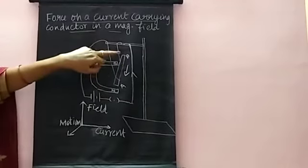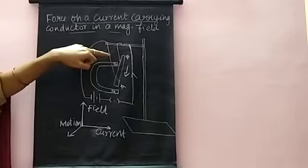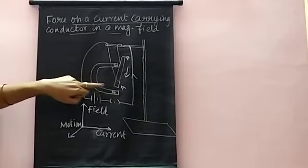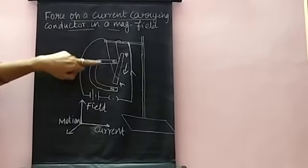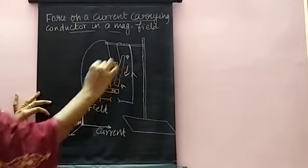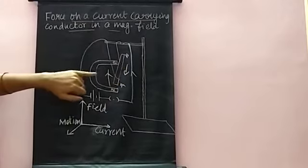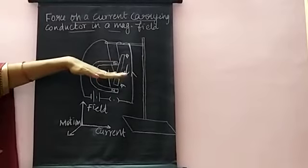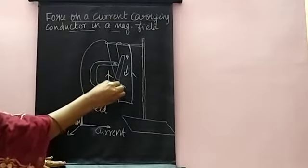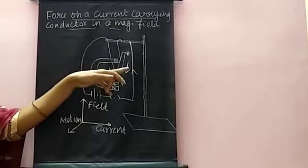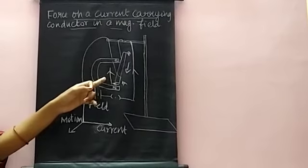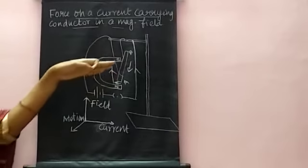The current is flowing in the direction of B to A. We know that the magnetic field comes from north to south. So the direction of the magnetic force should be in this direction. The current, the magnetic field, and the force or the motion of the conductor — these three are mutually perpendicular.